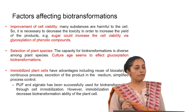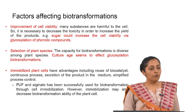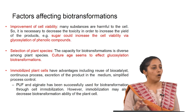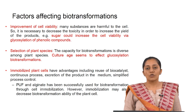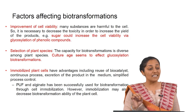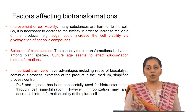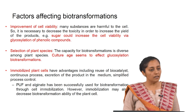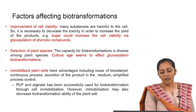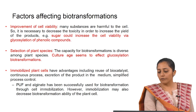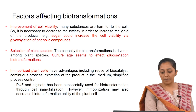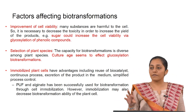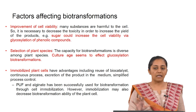Factors affecting biotransformation efficiency include: improvement of cell viability — whether resting cells or cells in the active phase are needed. Many substances may be harmful to the cell, so it is necessary to decrease toxicity to increase product yield. For example, sugar can increase cell viability via glycosylation of phenolic compounds. Selection of plant species is also important, as the capacity for biotransformation is very diverse. Culture age and growth phase are similarly important factors.